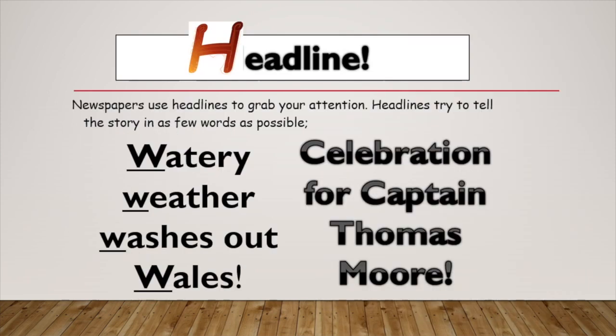The first feature is a headline. A newspaper uses a headline to grab your attention. Headlines try to tell you the story in as few words as possible, and they're often alliterative. You can see examples like 'Watery weather washes out whales,' or 'Celebration for Captain Thomas More' — it could be Colonel Thomas More now, really.